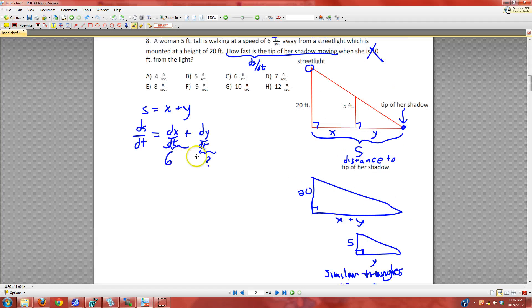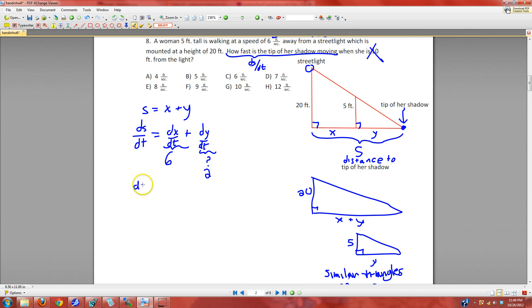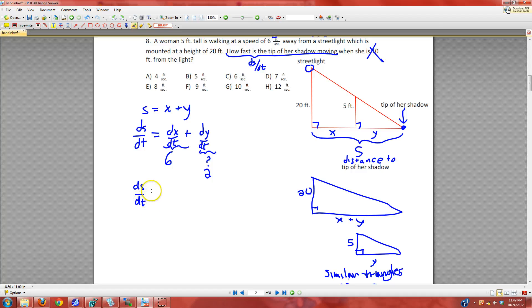And so, now that we know dY/dt, we can say what dS/dt is, just the sum of these. And so, we get 8, the units are in feet per second. And that is the answer to this second question.